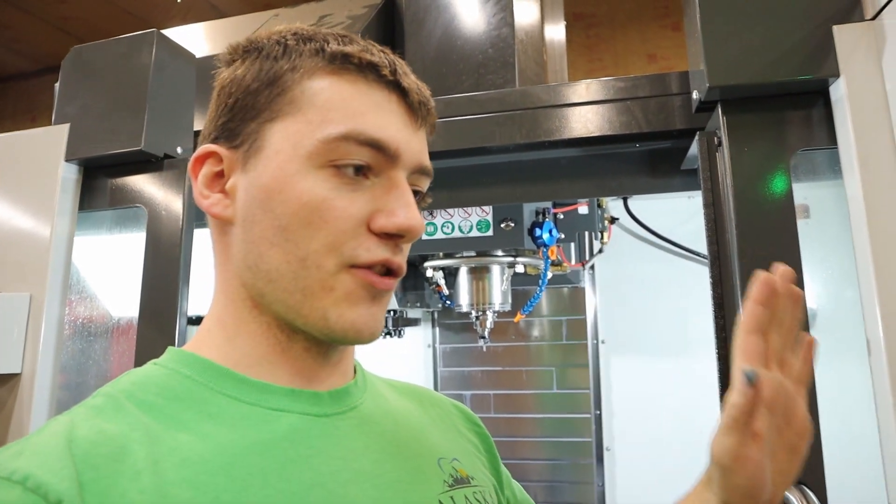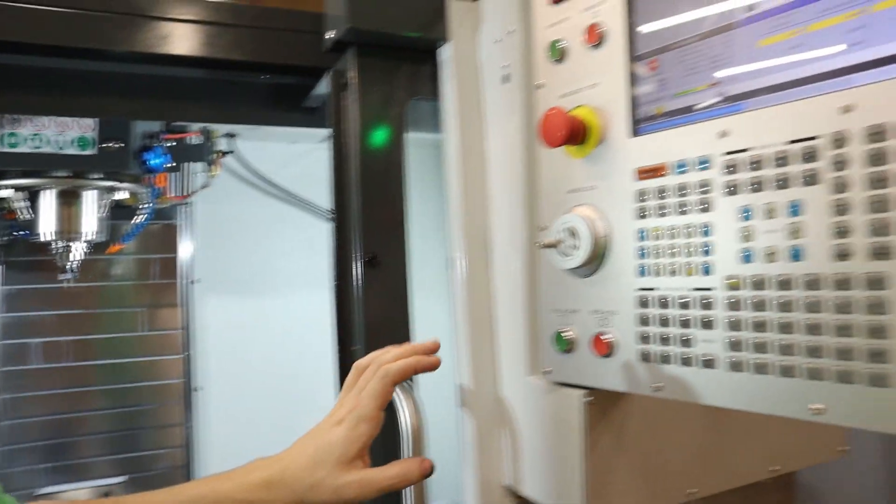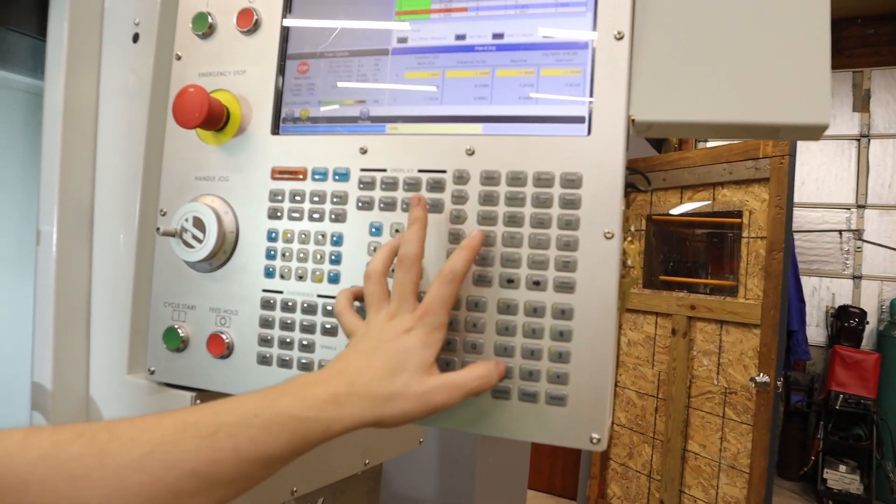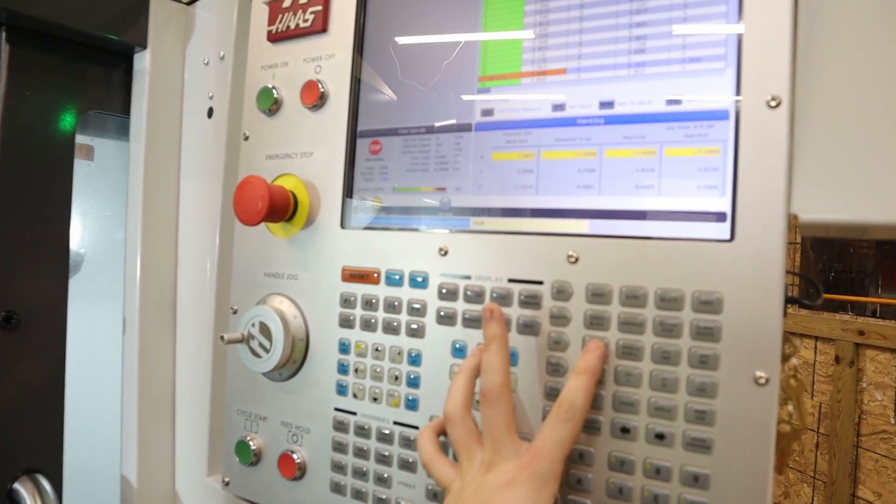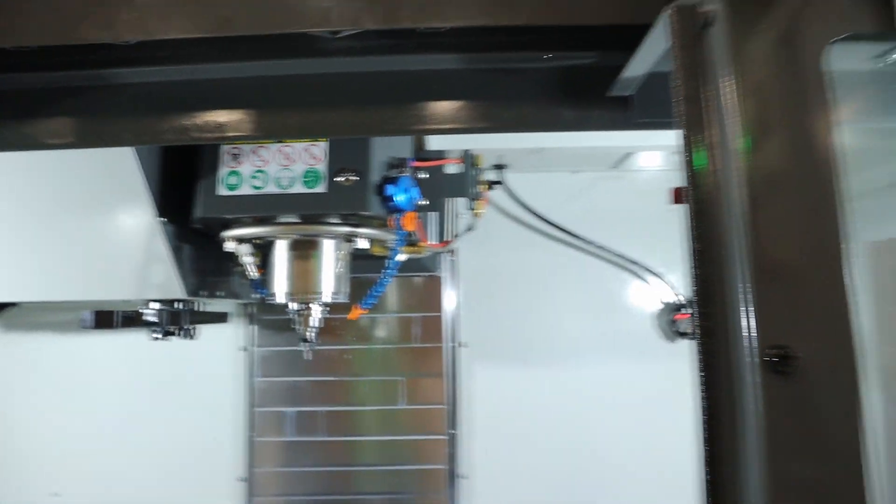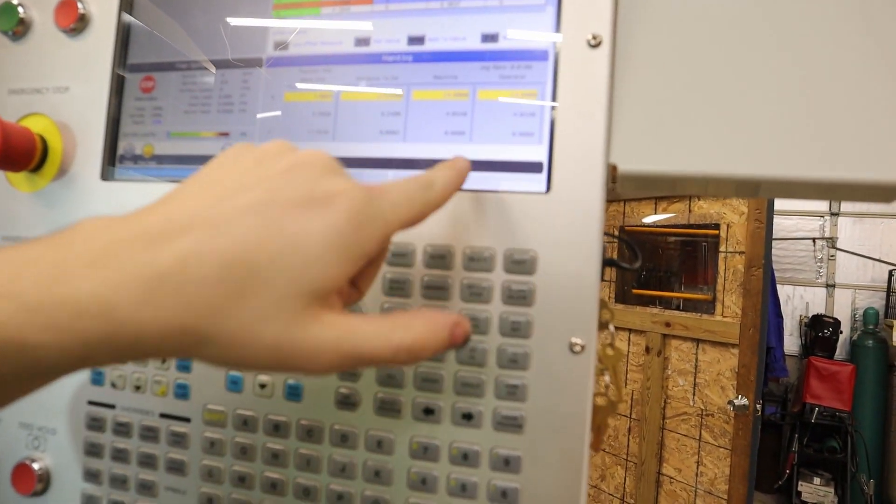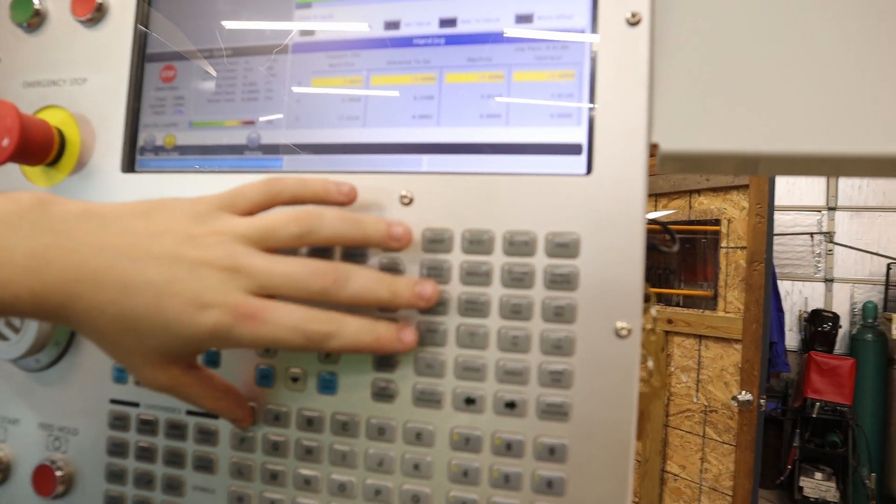So first things first. To actually activate air blast on the control, all you do is hold shift and then you do coolant. And a little message will actually pop up here that'll say air blast. I'll do it again.